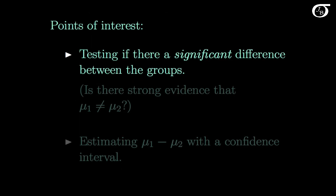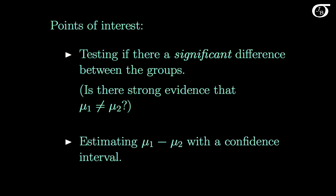We are very often interested in testing to see if there is a significant difference between the groups. In other words, is there strong evidence that the population mean of group 1 differs from that of group 2? And we are also often interested in estimating the difference in population means with a confidence interval.